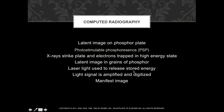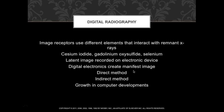With computed radiography, you have a latent image on a phosphor plate — photo-stimulable phosphorescence. X-rays strike the plate and electrons are trapped in a high-energy state. We use a laser light to scan the plate, releasing that stored high energy. The laser signal is amplified and digitized, giving us the manifested image.